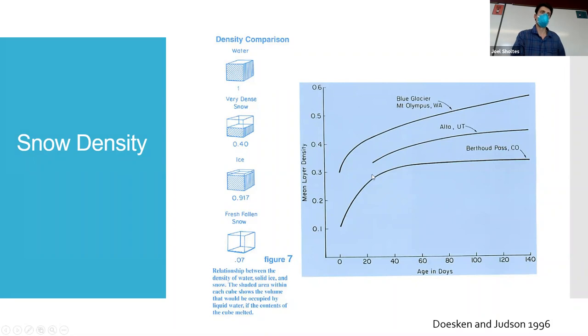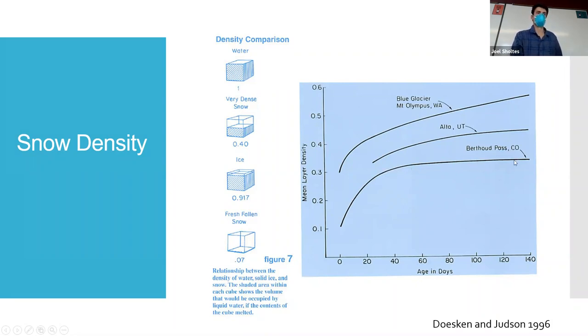A graph shows snow density over time — you can see it slowly levels off over days, weeks, and months to a certain maximum density depending on the location.